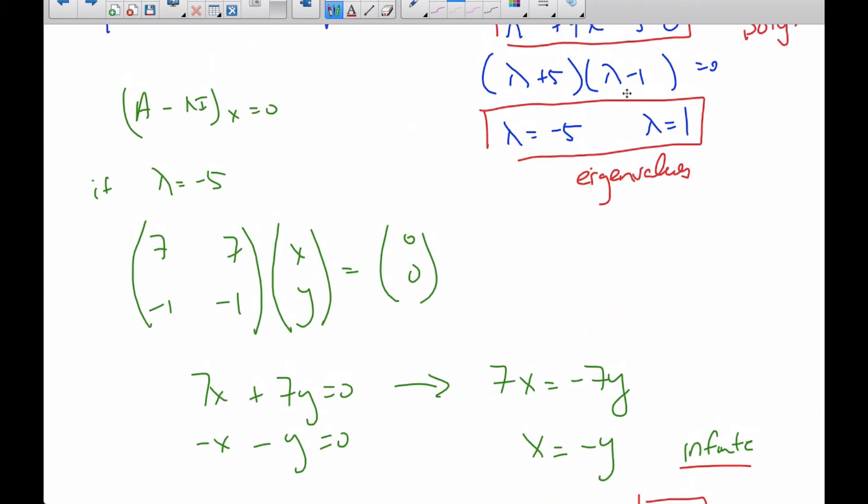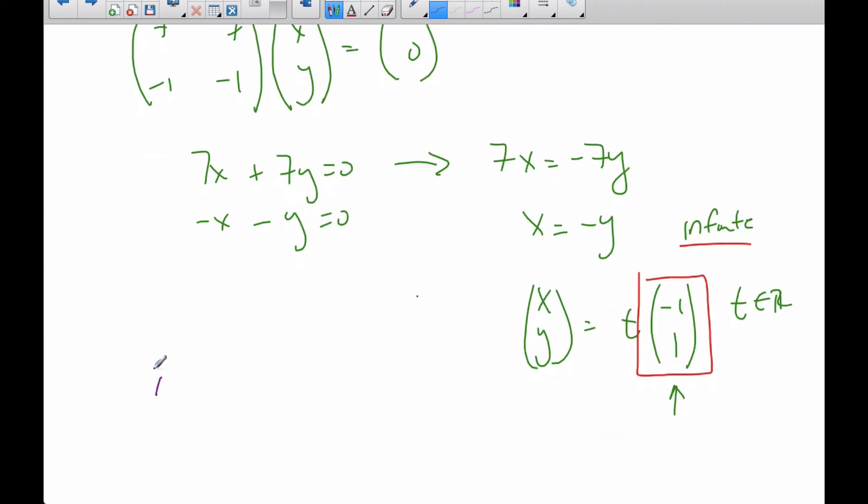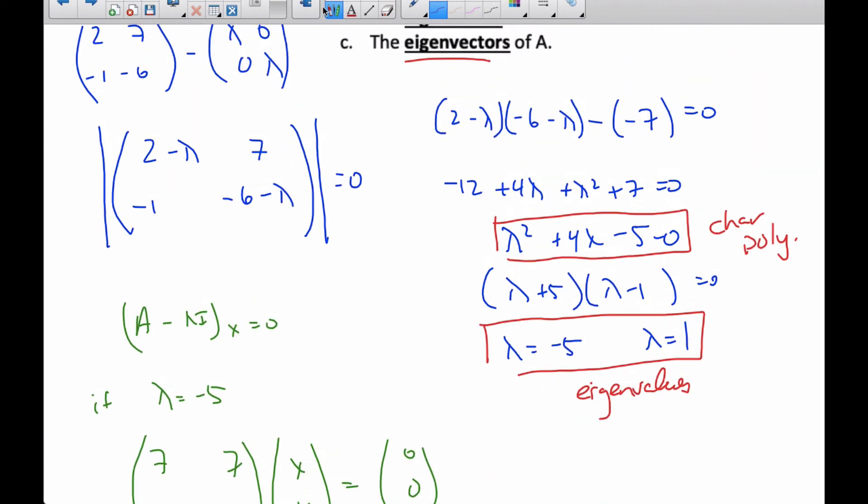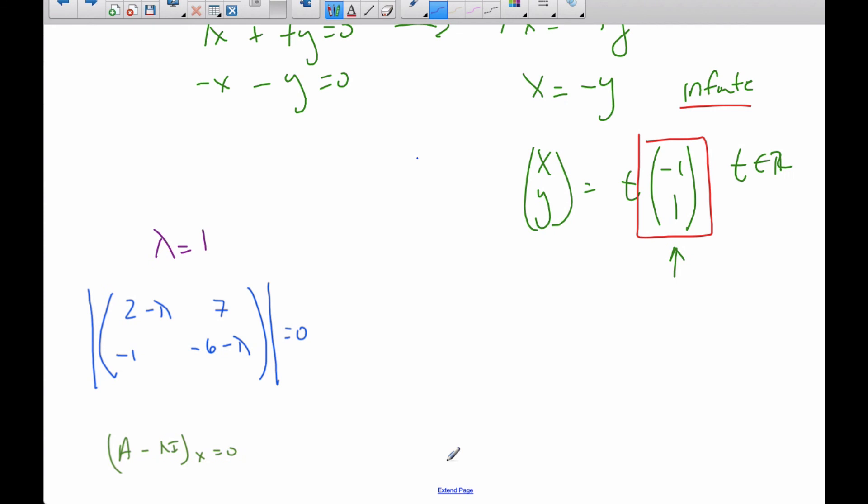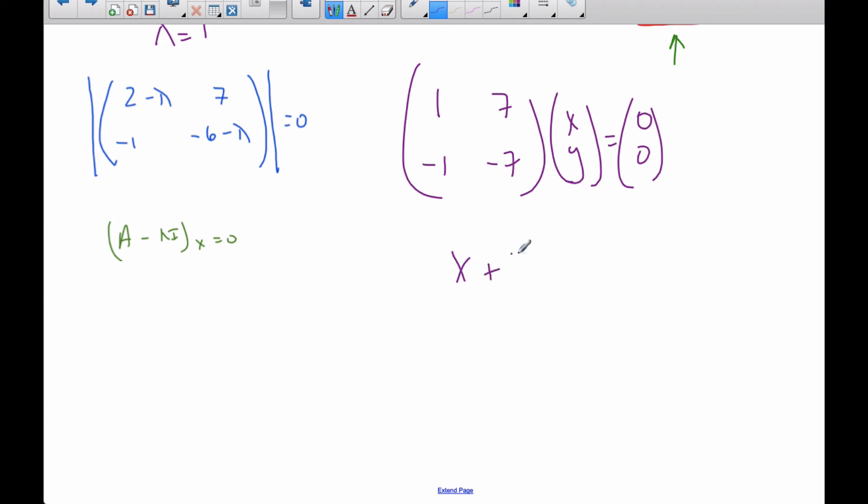Okay? So, we do the same thing for lambda equal to 1. So, if lambda equals 1, well, I plug it into this matrix here. Let me call this down, so I don't have to keep referring to it. Okay? So, I pull that down. Okay? I'm going to plug lambda in here. And so, when I plug lambda in, I get 2 minus 1 is 1, and 7, and negative 1, and negative 7, times x, y is equal to 0, 0, which is the equation I'm solving. And so, then when I solve this, again, I get x plus 7y equals 0, or negative x minus 7y equals 0. And again, these equations are the same. They just differ by multiple, and so if I solve what I know, I know x is equal to negative 7y.